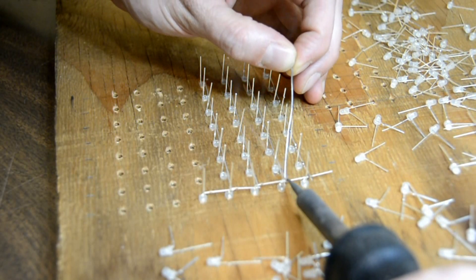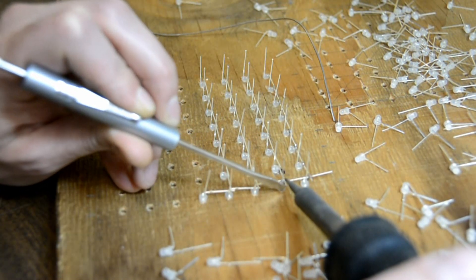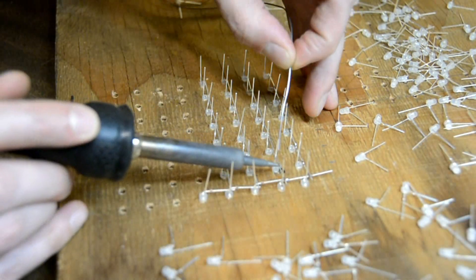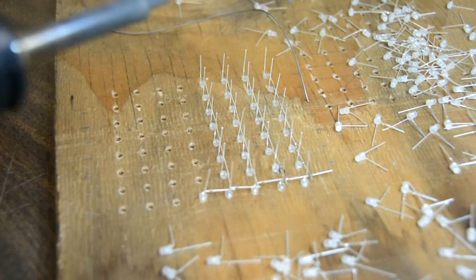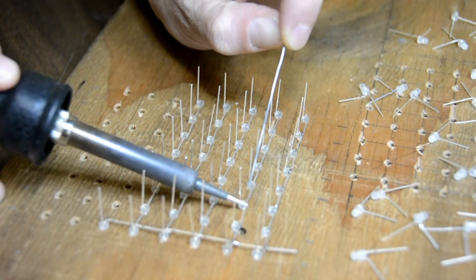I got symmetrical spacing from layer to layer by using mini toggle switches that have a body width of a half inch. And the toggle switch, you use those just for spacing, right? Yeah, just to space it out so I can keep a perfect square.